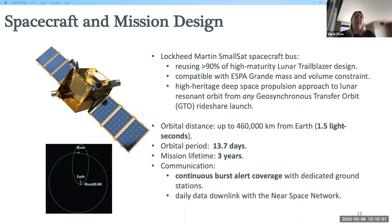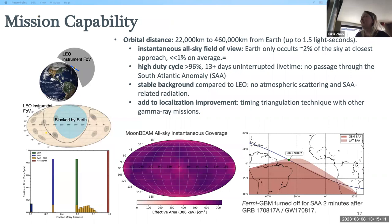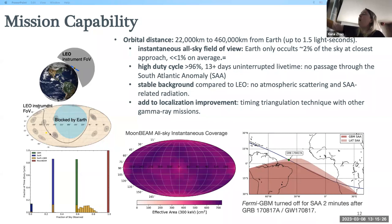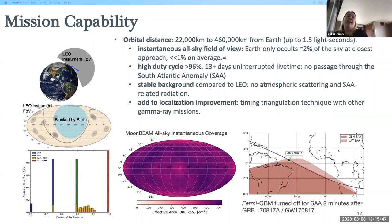One challenge is how to get data down to the ground from cislunar orbit. We've been in discussions for daily data downlink with the Near Space Network. For mission capability: in cislunar orbit we'll be 22,000 to 460,000 kilometers from Earth. Current missions in low-Earth orbit like Fermi GBM have about 30% of their sky blocked by the Earth, which is problematic for observing gamma-ray bursts that happen all over the sky. When in cislunar orbit, we will get instantaneous all-sky field of view, with the Earth occulting only about 2% of the sky at closest approach.